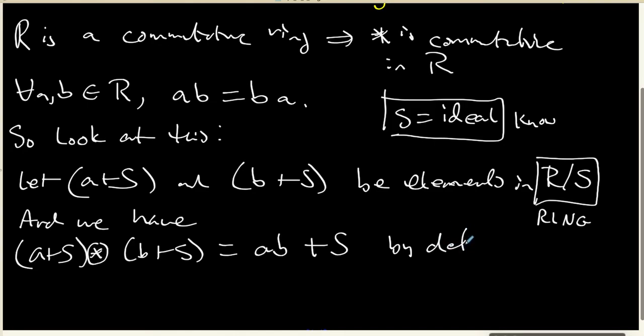That's by the definition of coset multiplication. But inside R, the element AB is exactly the same as the element BA. So this is going to be equal to BA plus S. And this is since AB and BA are exactly the same inside our commutative ring R.